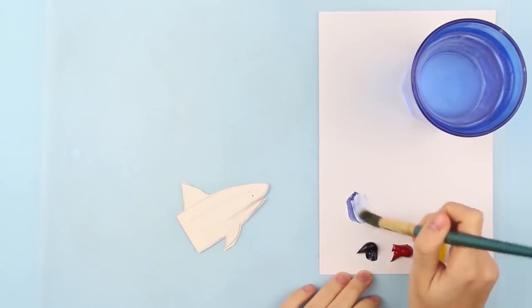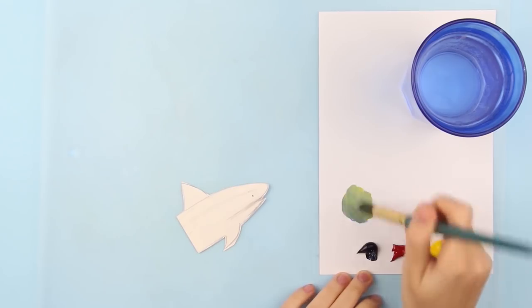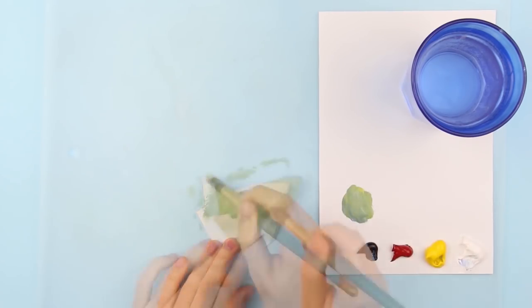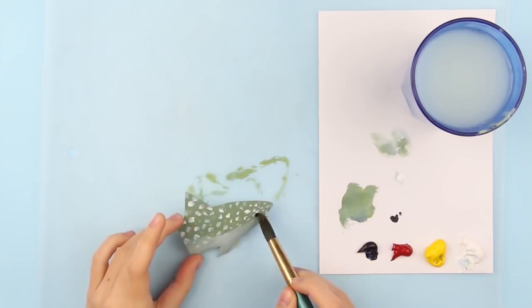Take three main colors: yellow, blue, and red. You will also need white. Mix the proper shade to paint a tiger shark. Add the distinctive spots and an eye.